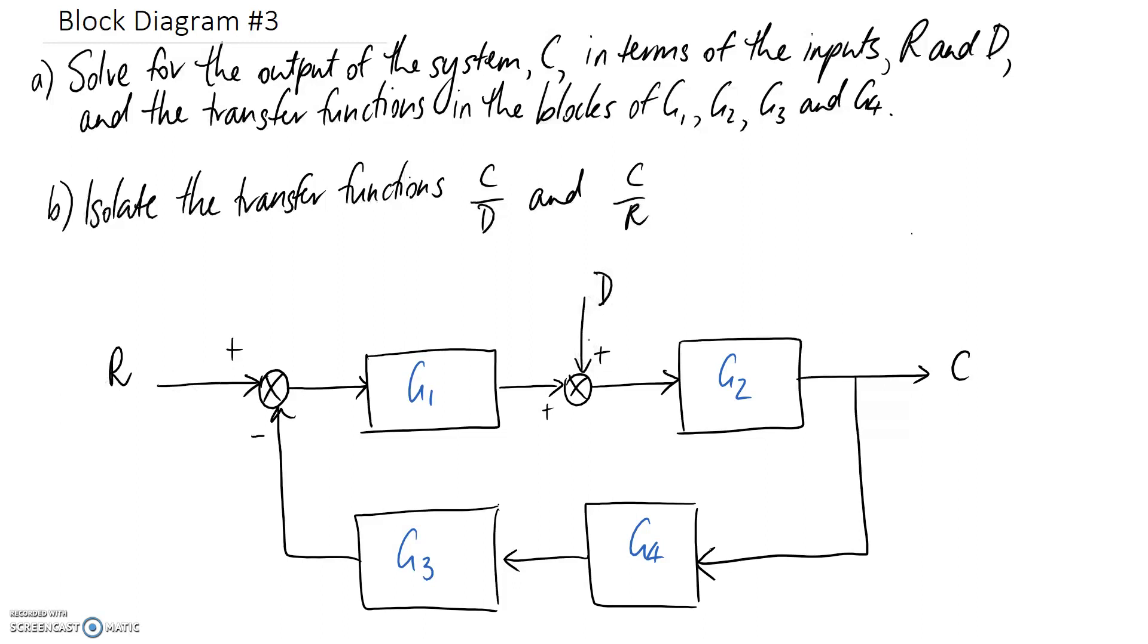There's two inputs to this system. R is going to be like a normal one but D is likely to be a disturbance, and we've also got the transfer functions inside the blocks to use. The second part of the question, part B, is going to be looking at isolating the transfer function C divided by D and C divided by R. So let's start with part A.